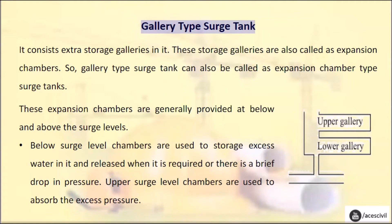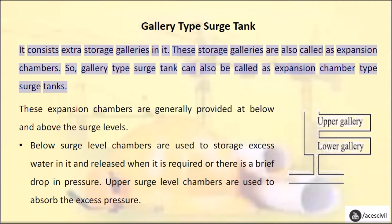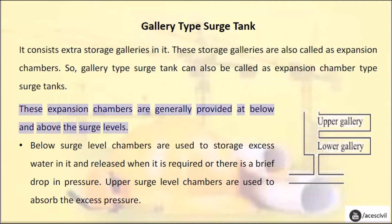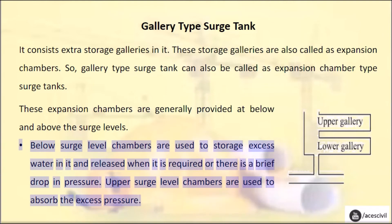Gallery type surge tank: It consists of extra storage galleries, also called expansion chambers. So, a gallery type surge tank can also be called an expansion chamber type surge tank. These expansion chambers are generally provided at below and above the surge levels. Below surge level chambers are used to store excess water and release it when required or during a brief drop in pressure. Upper surge level chambers are used to absorb excess pressure.